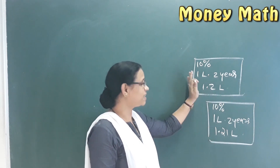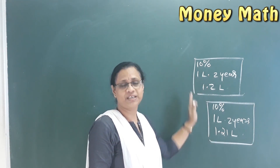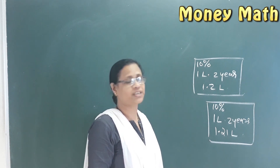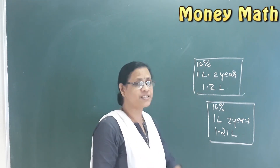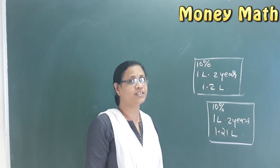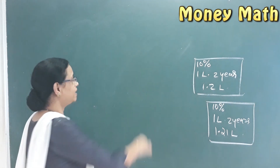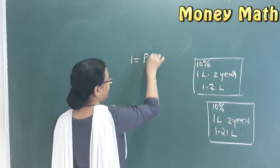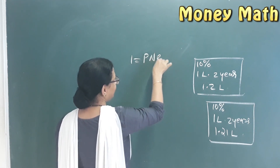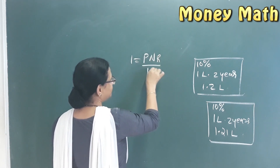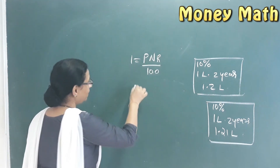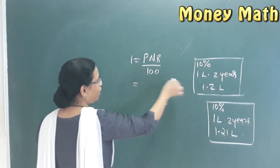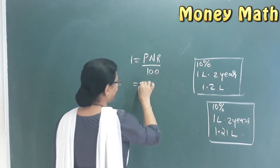The first is simple interest, and the second is compound interest. We have learned how simple interest works: I is equal to PNR by 100. Where are we going with this?